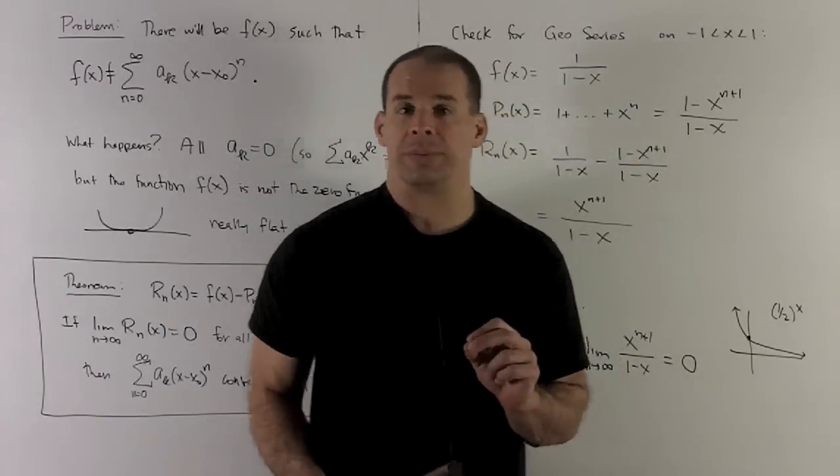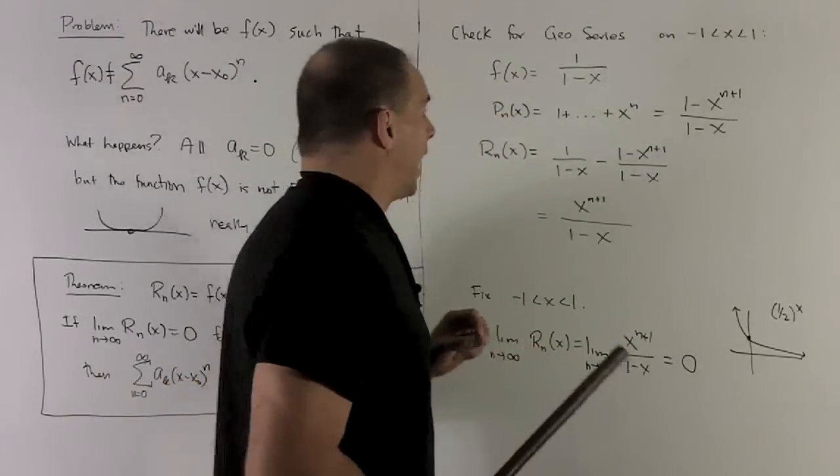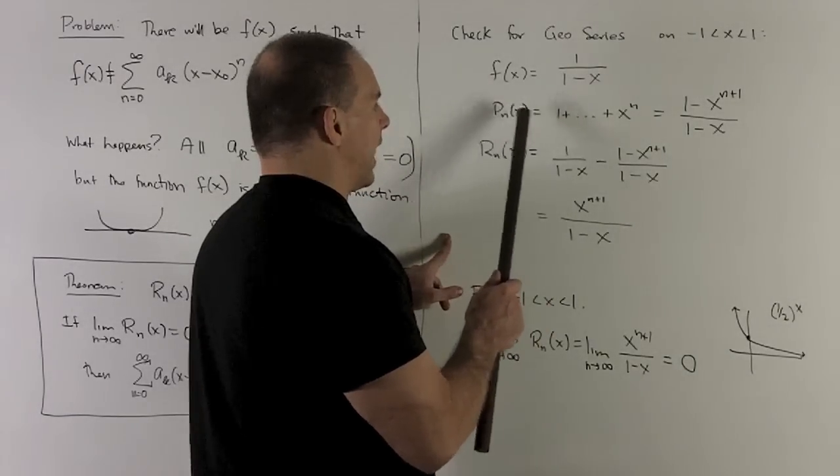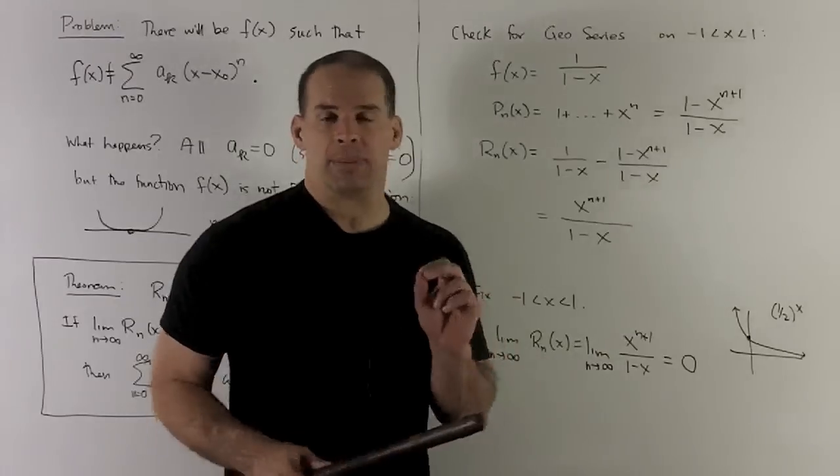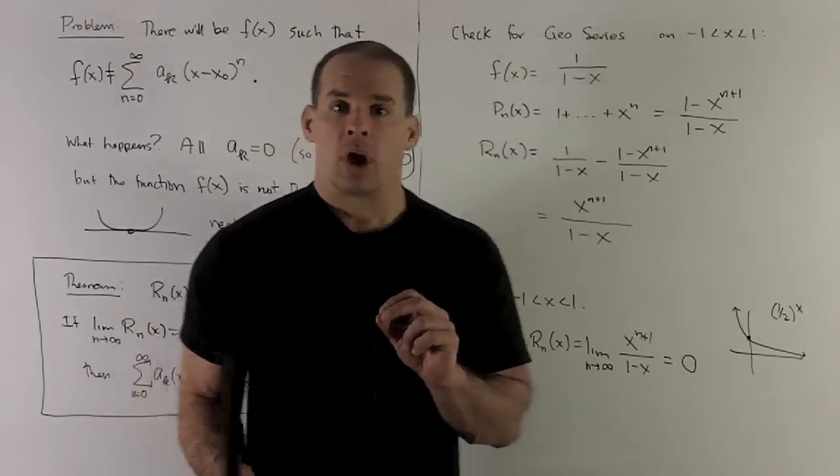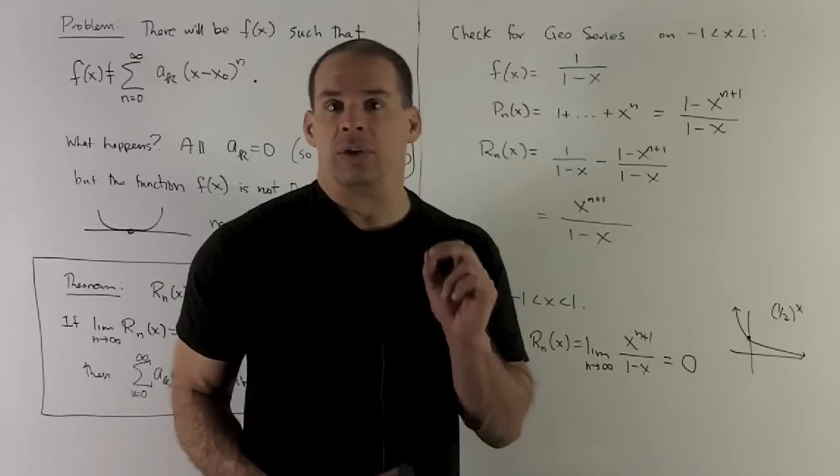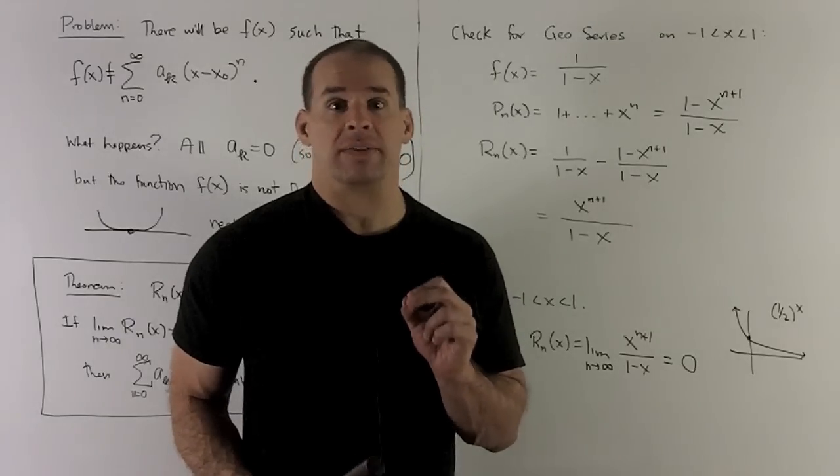What's the conclusion? Well, the first thing is going to be that our series, so if I let this pn of x let the x go off to infinity, our usual geometric power series, our remainder theorem says that function is going to converge. We already knew that, but this gives us confirmation of it.